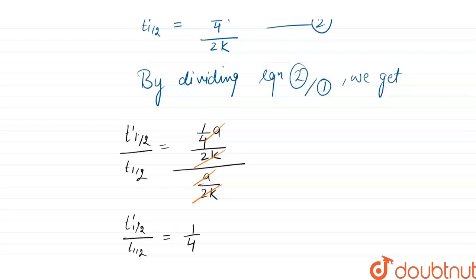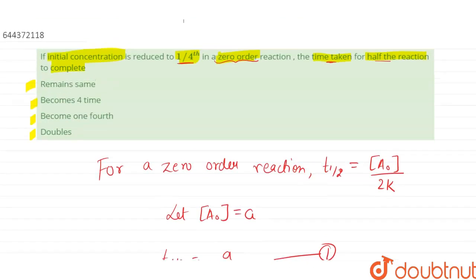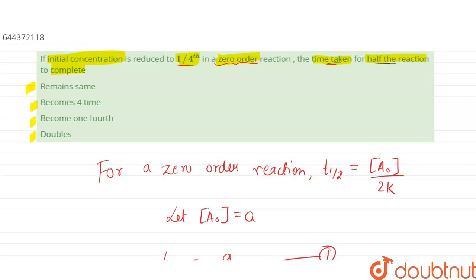So let us see the options that has been given to us. The time taken for the half reaction to complete will become 1 by 4. So option number 1 is remain same, this is incorrect. Become 4 times, no. Doubles, no. So option number 3 is the correct answer. Thank you.